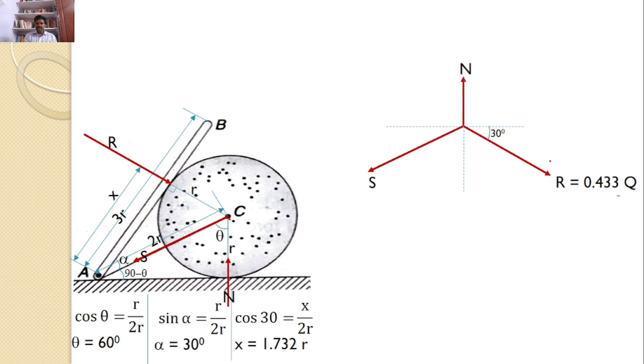Let us discuss the angles. This R makes an angle 30 with the horizontal and S makes an angle 30 with the horizontal. I can apply the sine rule. According to the sine rule, N divided by sine 120 equals S divided by sine 120 equals 0.433 Q divided by sine 120. Hence, I can find the required force S by using these two equations. S is equal to 0.433 Q is the answer for the given problem.